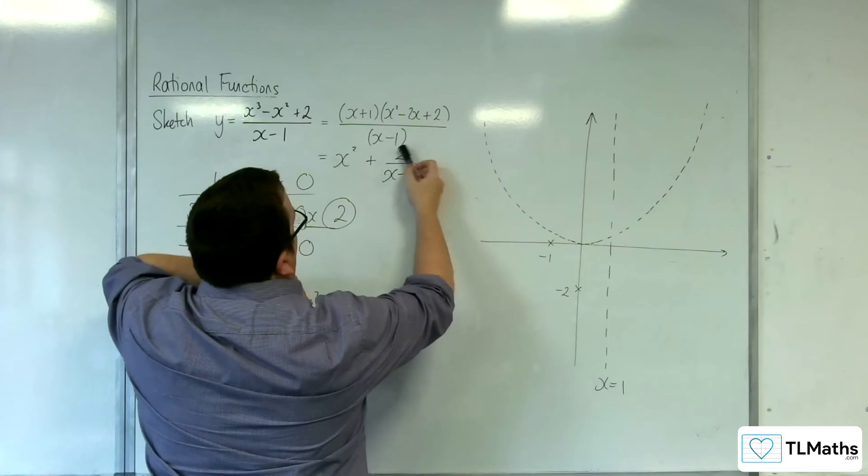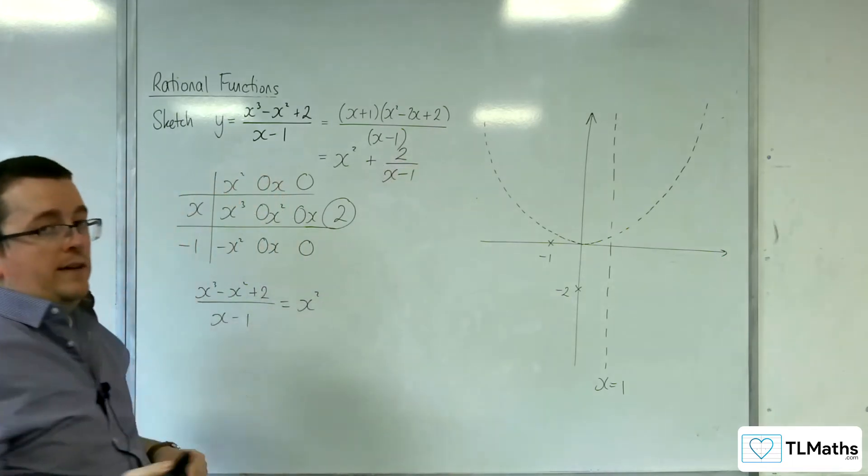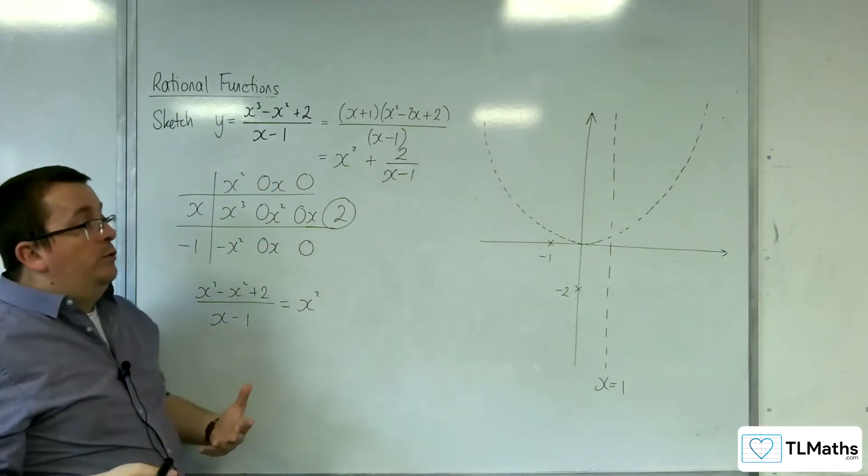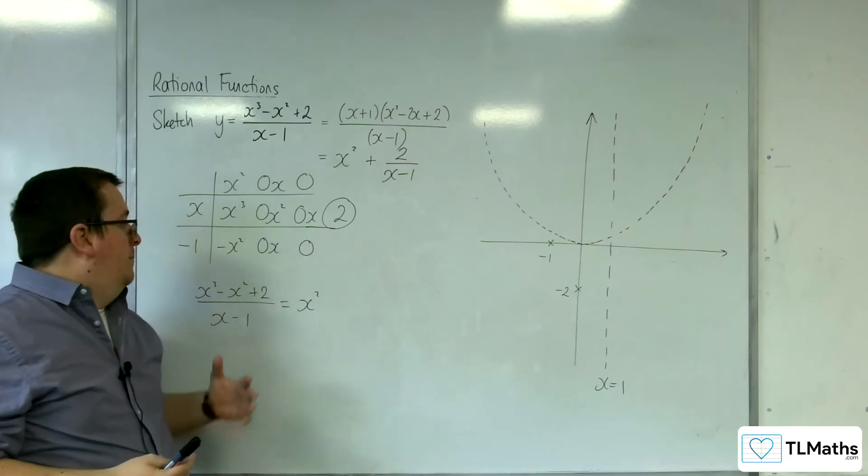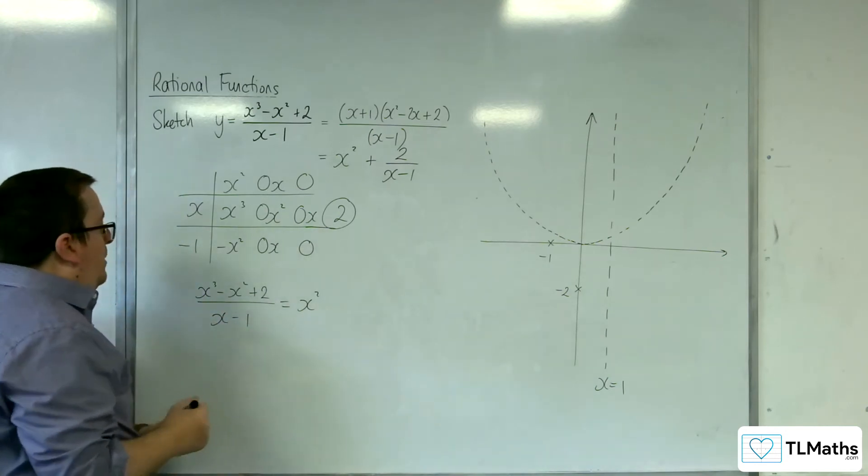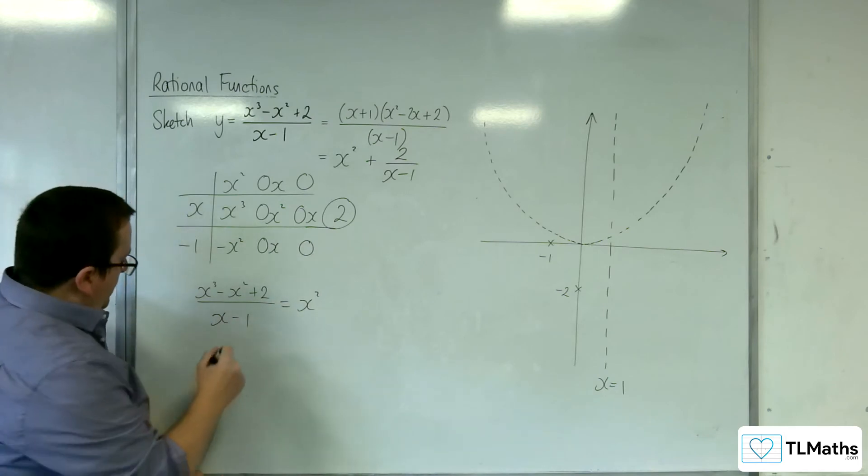And there are no points where that can be 0, because the numerator can never be 0. So, actually, I know that the curve won't cross the asymptote. But I'll just show it this way as well, because this is the longer way that I've been showing it in the videos.